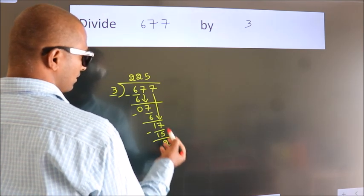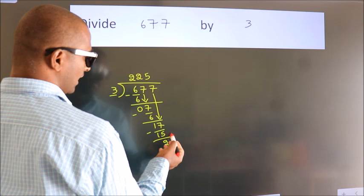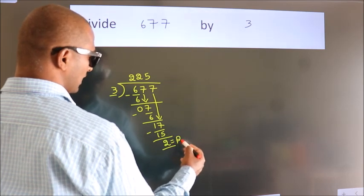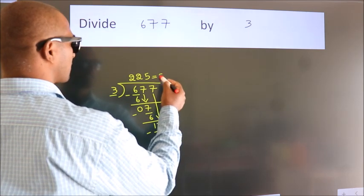After this, no more numbers to bring down. So, we stop here. This is our remainder. This is our quotient.